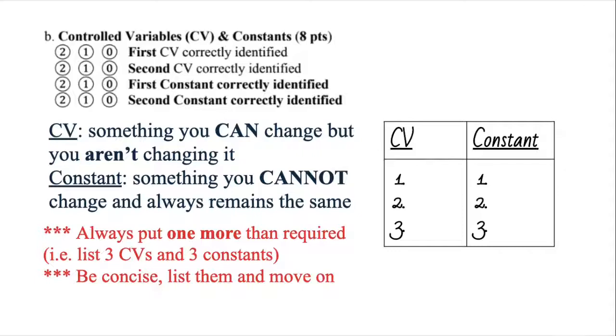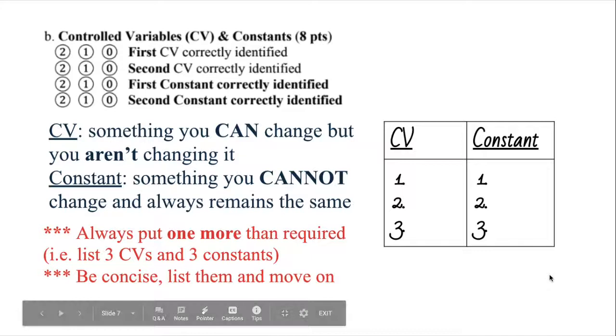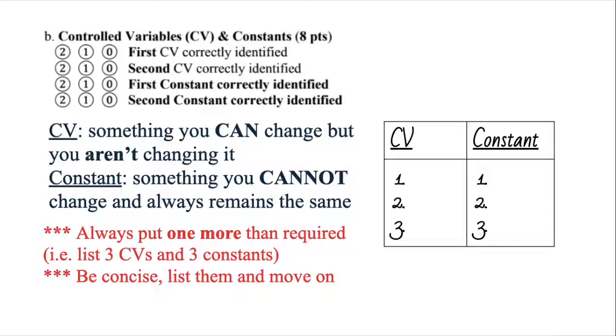So it is asking in the rubric for two of each, two controlled variables and two constants. However, just in case one of them, let's say you stated was inaccurate, we want you to state three for each kind, just to make sure that we can get more points. Not that you'll get extra credit for stating a third, but if one of them is wrong, you still have the other two to get full credit for that. But also, if it's not asking you for a reasoning, do not state a reasoning. Controlled variables and constants should be very quick. Just state them, list them all, and move on. Make a little table, as you can see in the slide. Don't spend too much time on it.